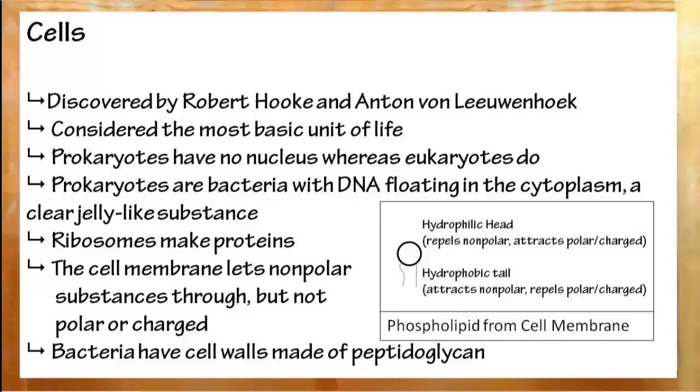Cells are often considered the most basic unit of life. Anything smaller, and it's usually not considered living. Cells were discovered by Robert Hooke and Anton von Leeuwenhoek. They come in two main types: eukaryotic and prokaryotic cells. Prokaryotic cells do not have a nucleus, where their DNA is simply floating around in the cytoplasm, a clear jelly-like substance. Their DNA can also be found in plasmids, which will be exchanged with other bacteria when they meet. Also inside the cytoplasm are ribosomes, which produce nothing but protein.